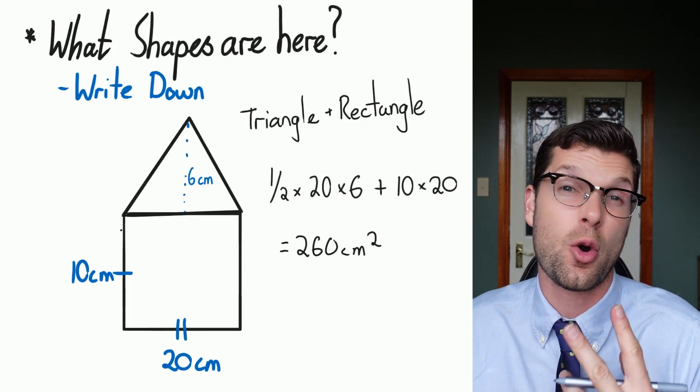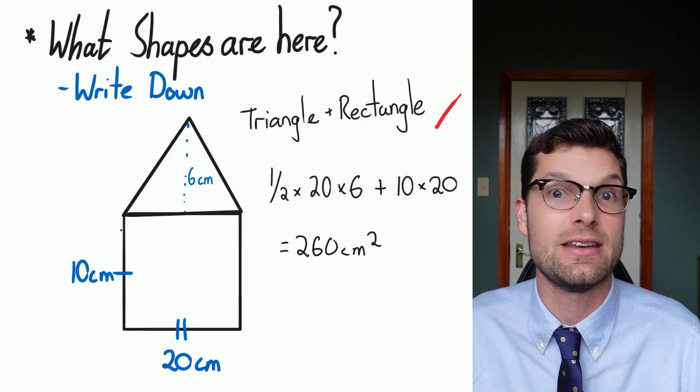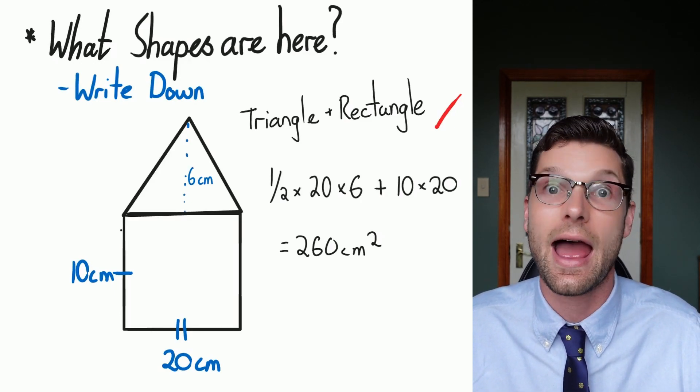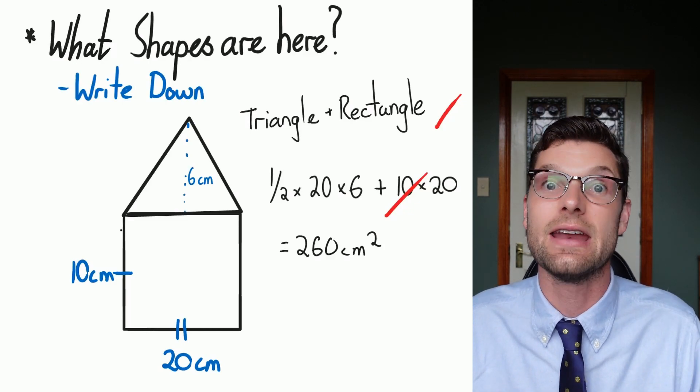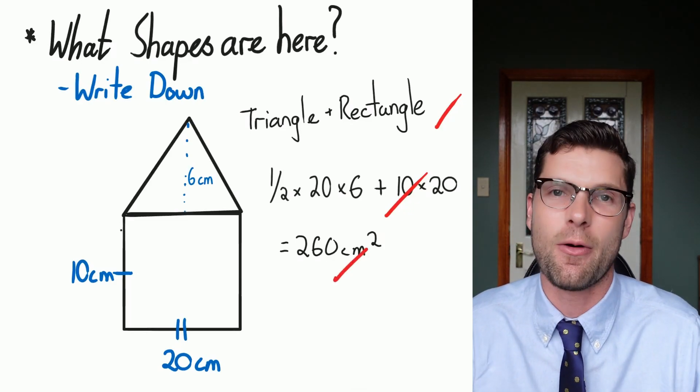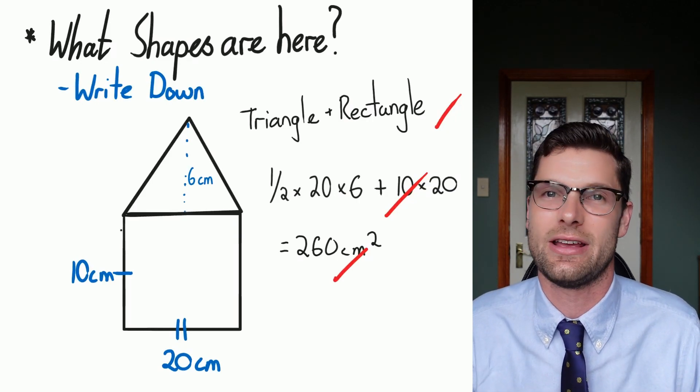These questions are super good because you always get three marks for them. So if you've got the triangle and rectangle written down you're showing your teacher this is what I'm doing. If you've got the formula for both of them done in your working you get a mark for that and then you get one for your final answer. So three marks come incredibly easy.